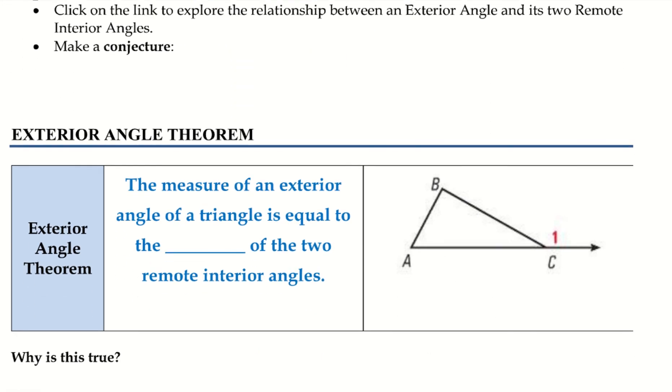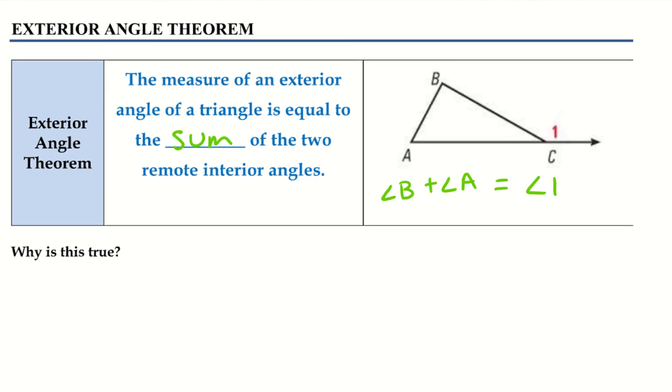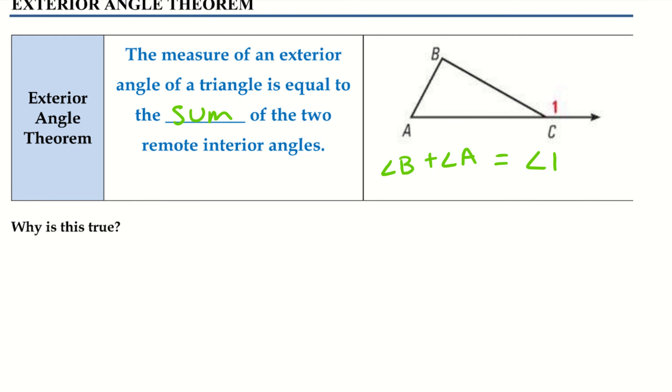Alright, so let's take a look at the exterior angle theorem. The measure of an exterior angle of a triangle is equal to the sum of the two remote interior angles. So that means angle B plus angle A is equal to angle 1. So why is this true? If we think about these two angles here, those form a linear pair.